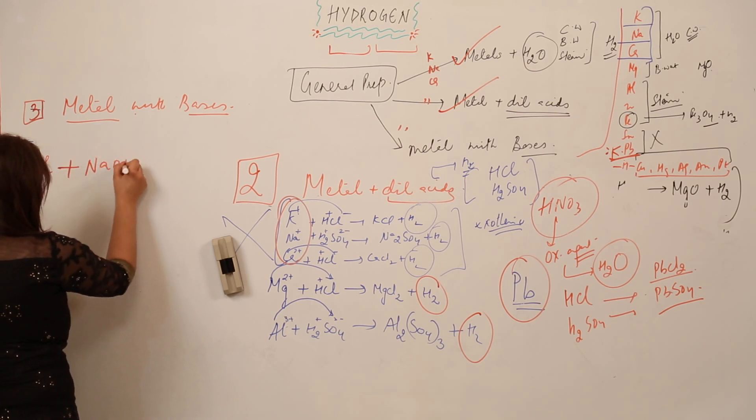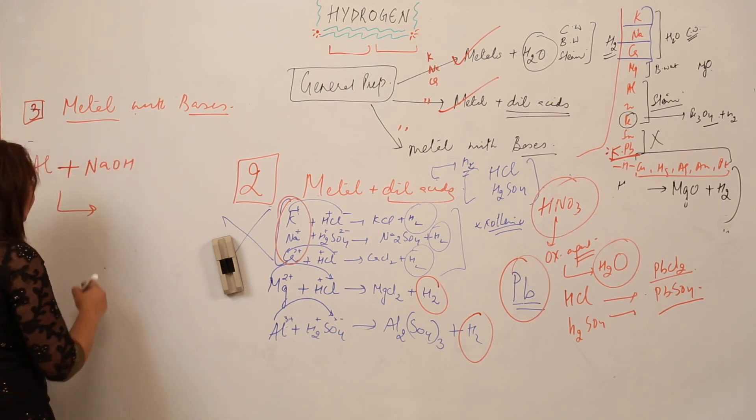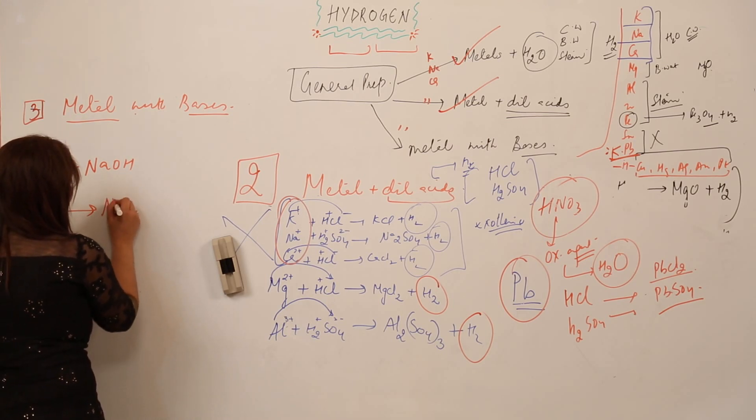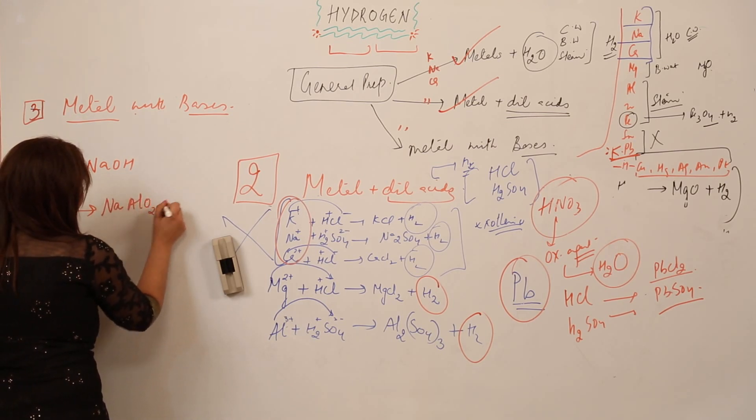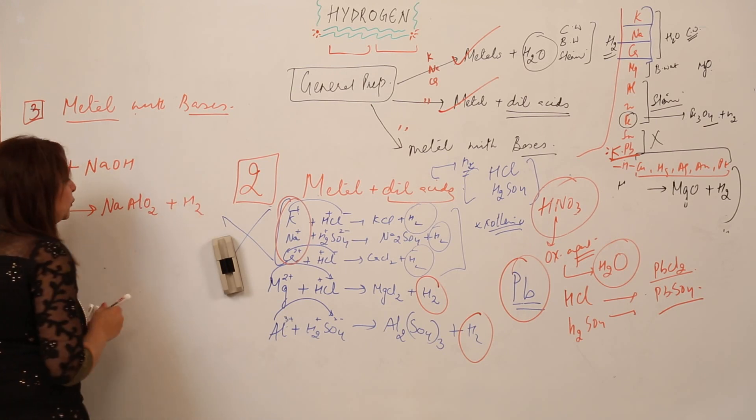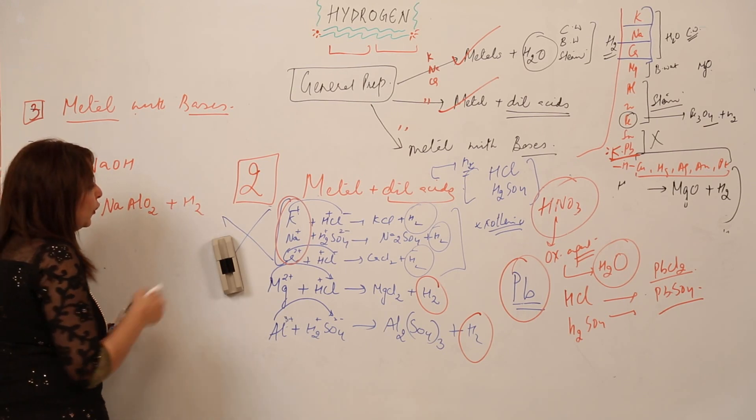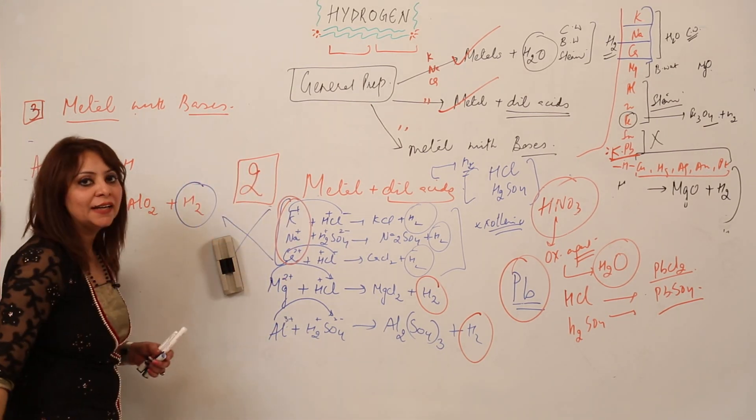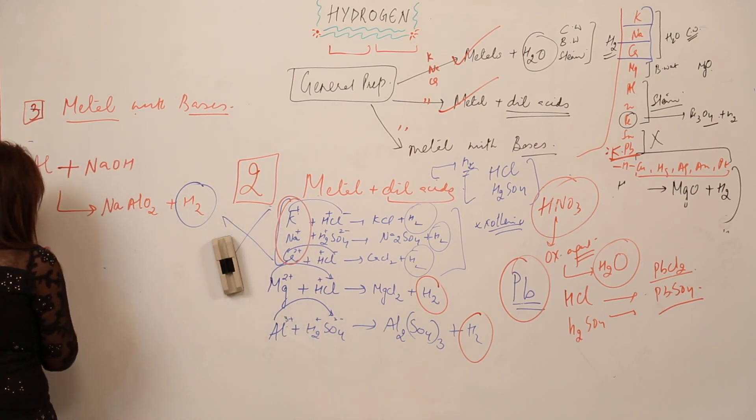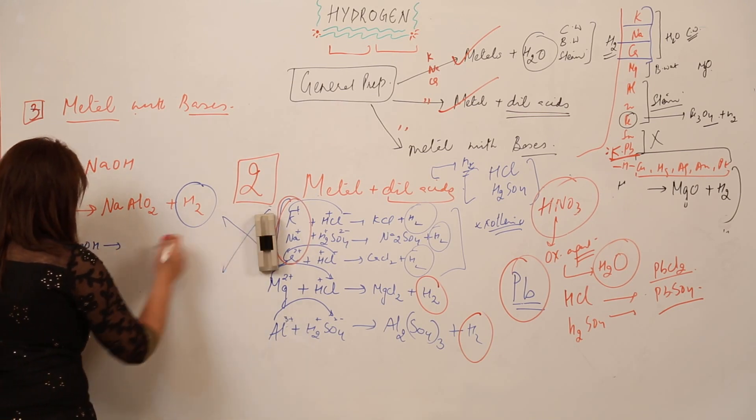I am reacting it with the base. When metal reacts with base, what does it form? It is going to form sodium aluminate, and along with it, obviously we are going to get our desired product for which we are doing all these reactions, that is H2.